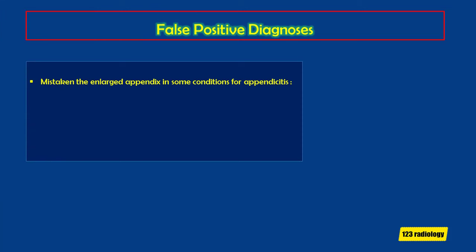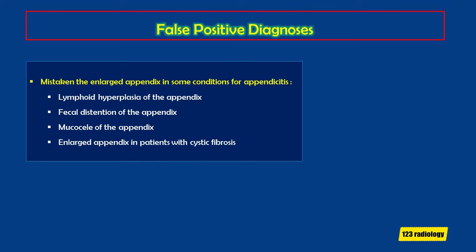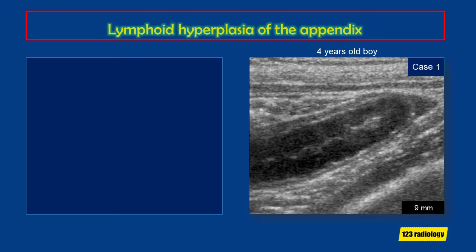Causes of false positive diagnoses include conditions that cause an enlarged appendix mistaken for appendicitis: lymphoid hyperplasia, fecal distension, mucocele, and enlarged appendix in patients with cystic fibrosis. In this example, a 4-year-old boy had an ultrasound unrelated to lower abdominal issues. The appendix measures about 9 mm, but the wall is very thickened with a cobblestone pattern and nothing in the lumen — this represents lymphoid hyperplasia of the appendix.